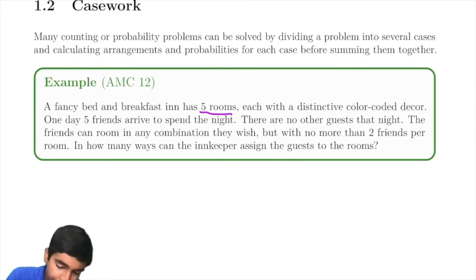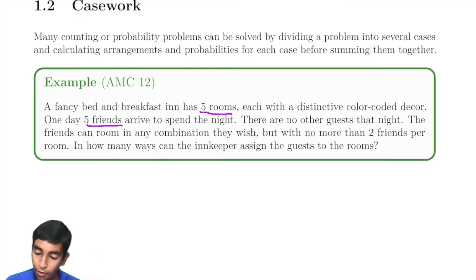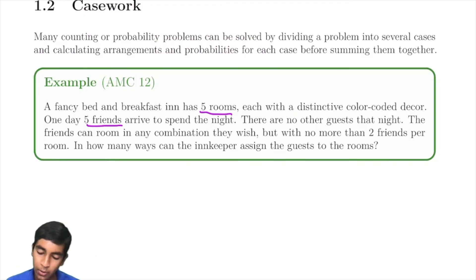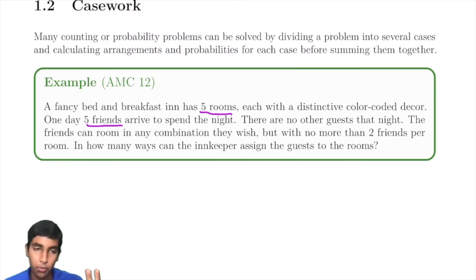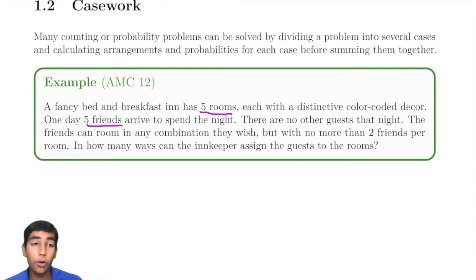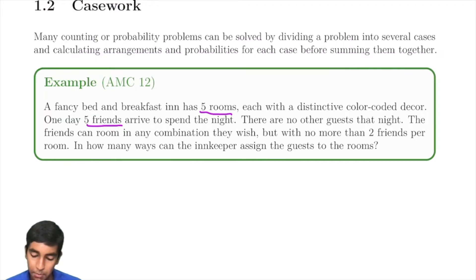One day, five friends arrive to spend the night. There are no other guests, and the friends can room in any combination they wish, but no more than two friends per room — so either one, two, or zero per room. In how many ways can the innkeeper assign the guests to the rooms?